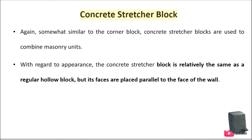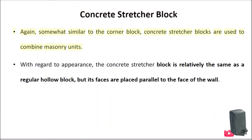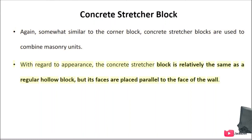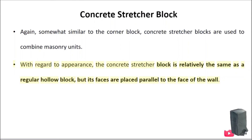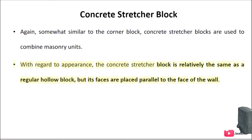The common size of a paving block is 60mm. Concrete Stretcher Blocks are somewhat similar to corner blocks and are used to combine masonry units. With regard to appearance, the concrete stretcher block is relatively the same as a regular hollow block, but its faces are placed parallel to the face of the wall.